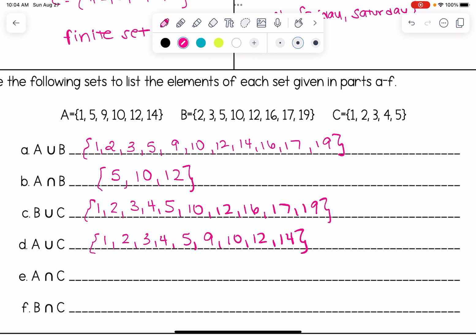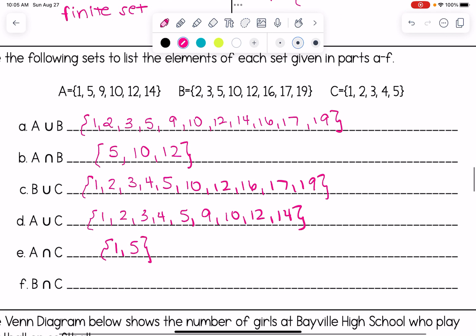All right parts E and F are both asking us for intersections. So those are values that are in both. So we're looking for E, any elements that are in sets A and C. So I can see one and five are in both of those sets. And for the last one here we're looking for elements that are in both B and C. And that looks like two, three, and five. So the big thing to remember there is are we working with and or are we working with intersections or unions?